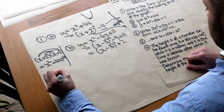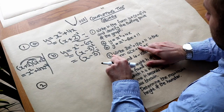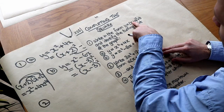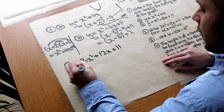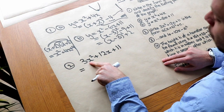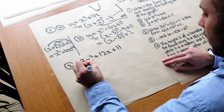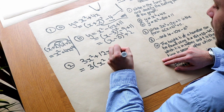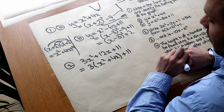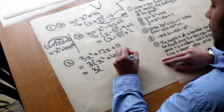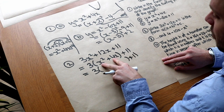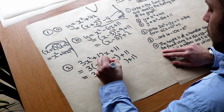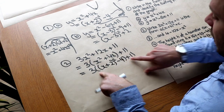Question 2: write 3x squared plus 12x plus 11 in the form a times x plus b, all squared, plus c. This is harder because there's a coefficient in front. First, factorise the 3 out of the first two terms, giving 3 times the bracket x squared plus 4x, leaving the 11 outside. Then complete the square inside the bracket — we already know x squared plus 4x equals x plus 2 squared minus 4.